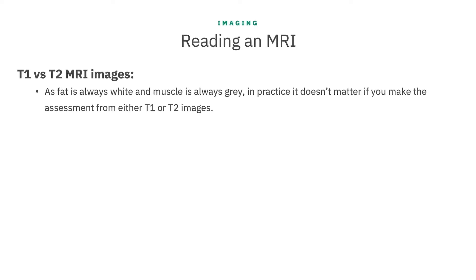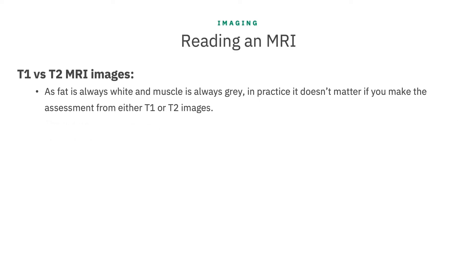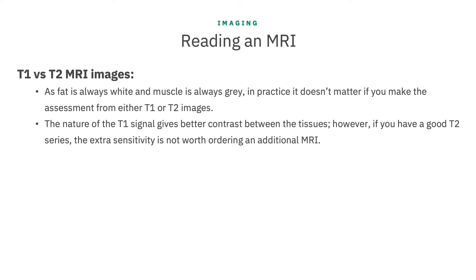For the purposes of this interpretation, what we are really trying to do is measure the multifidus and then determine the extent of degenerative changes and fatty infiltration in the muscle. As fat is always white and muscle is always gray, in practice it doesn't matter much if you make the assessment of the multifidus from either T1 or T2 weighted images. If you have the choice, the nature of the T1 signal gives better contrast between the tissues we're investigating. I'm going to use the T2 images for the rest of this demonstration to make this point.